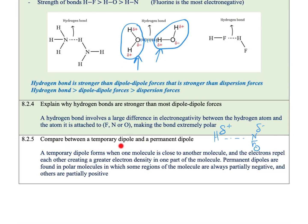In this learning objective, we compare a temporary dipole and a permanent dipole. A temporary dipole forms when one molecule is close to another, and the electrons repel each other, creating greater electron density in one part of the molecule. This is caused by the constant movement of electrons, whether in polar or non-polar molecules. For permanent dipoles — like in hydrogen bonding or dipole-dipole forces — we find these in polar molecules where some regions are always partially positive or partially negative. For example, between H and N, H is always partially positive while N is always partially negative, creating a permanent dipole. In a temporary dipole, it's not always the same — it's constantly changing.